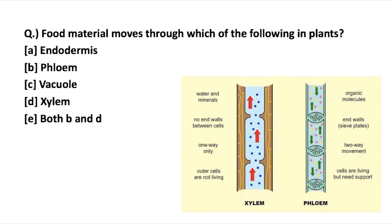Now today's question: food material moves through which of the following in plants? Very easy question — we all studied this in school. Let's discuss each option. First, endodermis. In simple terms, endodermis is basically the layer that separates the inner vascular tissue from the outer cortex. It functions as a selective nutrient intake, so endodermis is not the one through which food material passes.